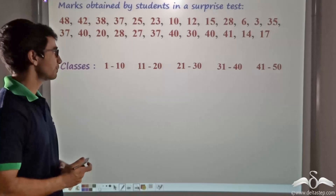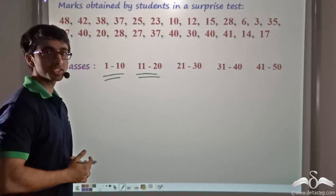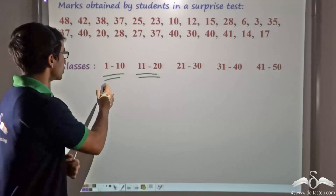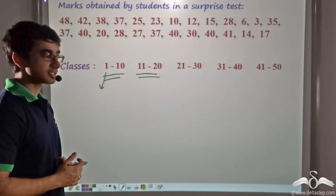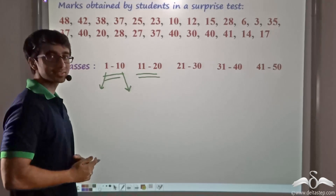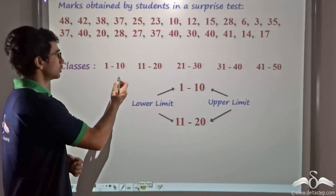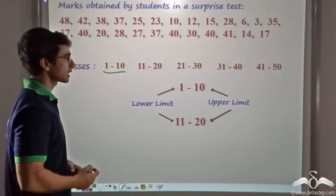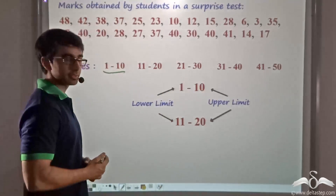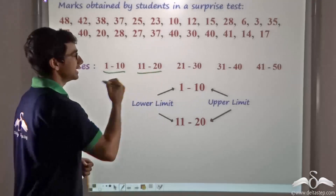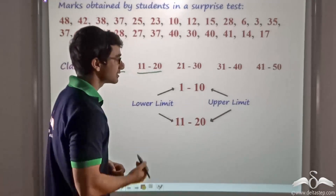Each class contains two numbers to represent it. The lower number is known as the lower limit of the class and the upper number is known as the upper limit of the class. So for class 1 to 10, 1 is the lower limit and 10 is the upper limit. For class 11 to 20, 11 is the lower limit whereas 20 is the upper limit.